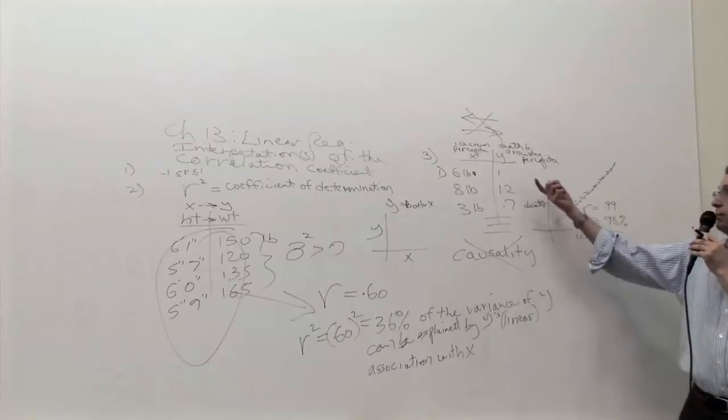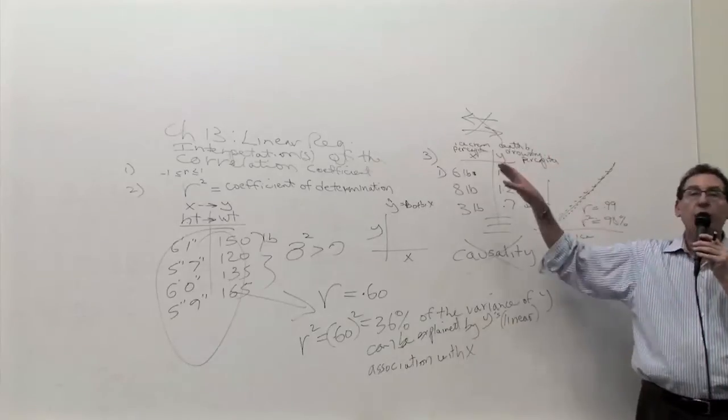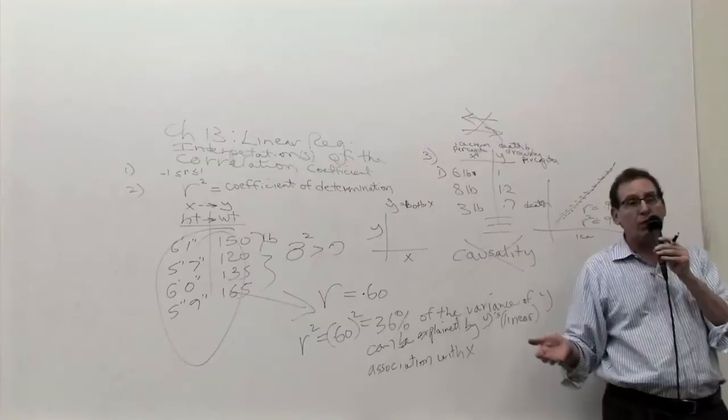The fact is they are independent. The fact is X and Y have nothing to do with each other, but when you graph them, you're going to get almost a perfect correlation that seems to contradict the whole chapter.